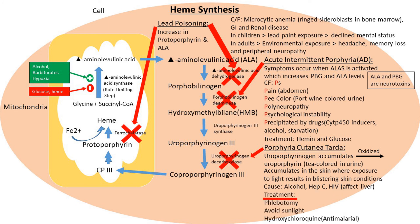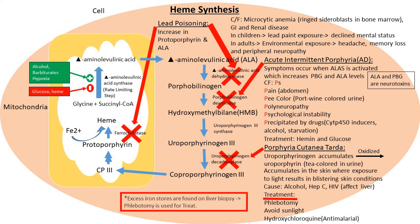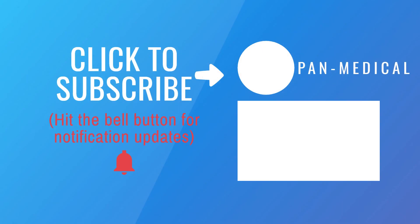Treatment is phlebotomy. Liver biopsy in these patients reveals excess iron, and removing it via phlebotomy improves liver function, where some heme is produced. Patients should avoid sunlight exposure, as uroporphyrinogen accumulating in the skin causes blistering when exposed to light. Hydroxychloroquine, an antimalarial drug, can also be given as treatment and is known to improve symptoms, though the mechanism remains unclear.